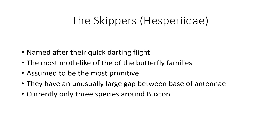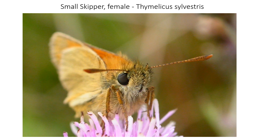So the skippers first — they're the most primitive of the butterfly families, very moth-like. We've got three species so far in Buxton with a possible fourth on the way, making its way slowly over to Buxton. This is a small skipper. Looking at the antennae, you'll see that the tips are pale brown. As you can see, there's quite a large gap between the antennae.